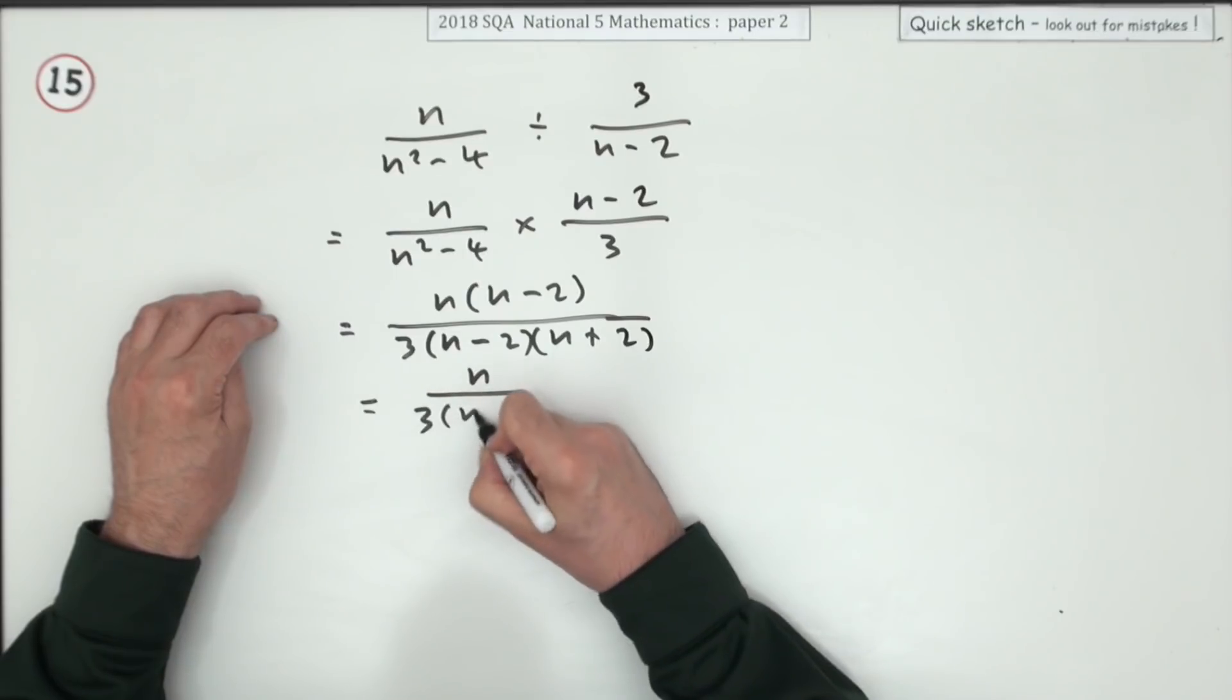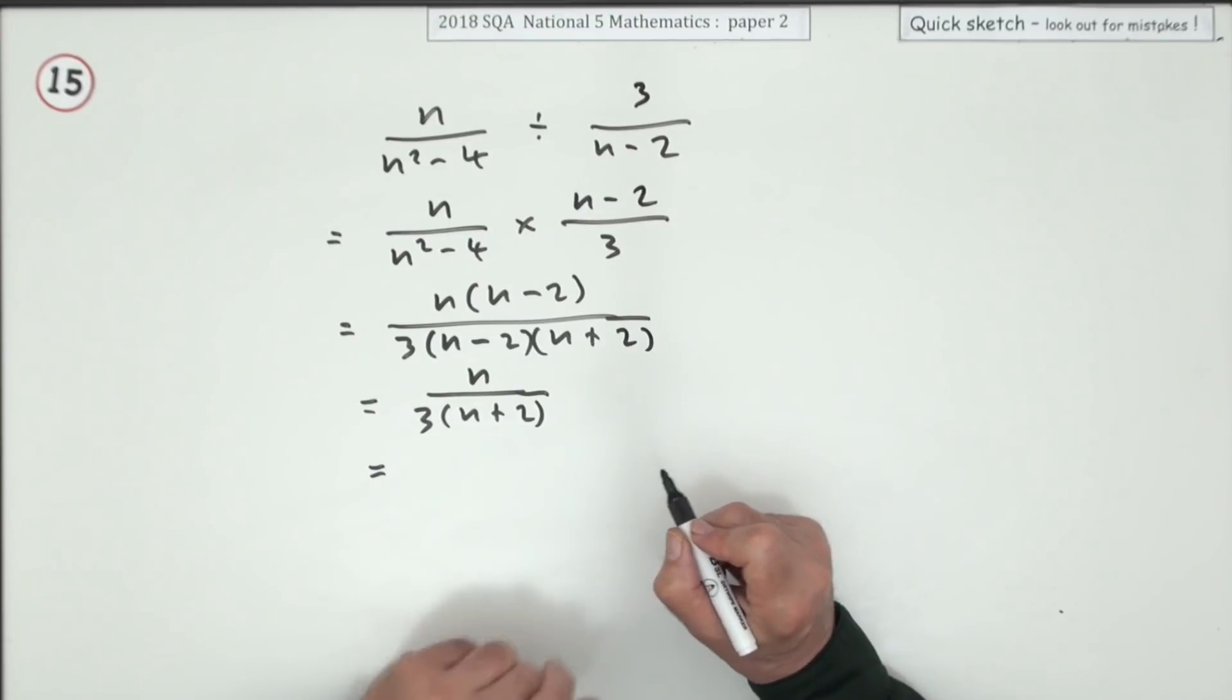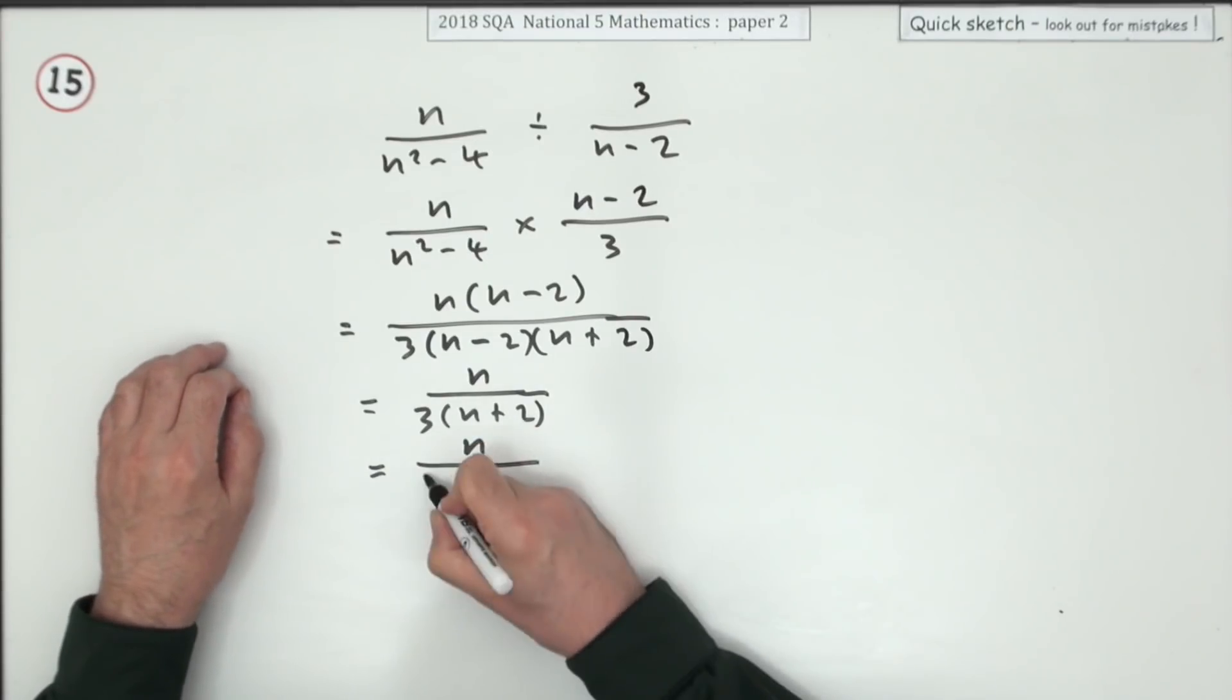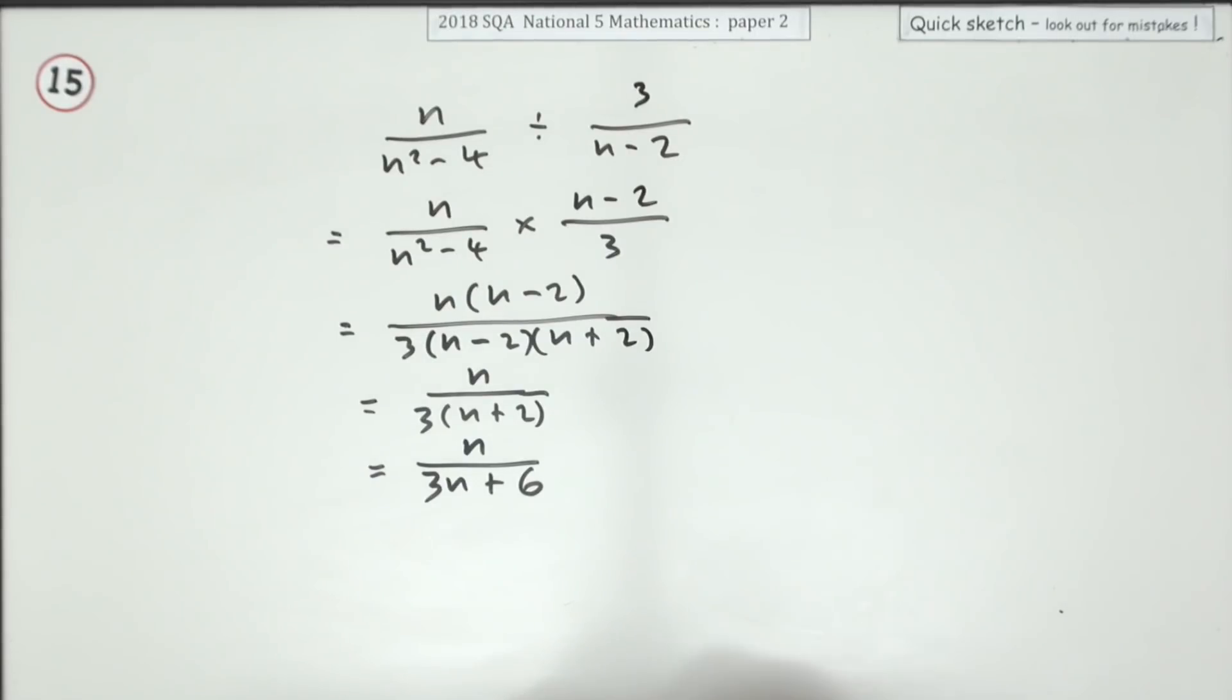I'm left with n on top and 3 times n plus 2 underneath. I just wonder should I leave it like that, which is quite neat, or will I just multiply it out to 3n plus 6? Well I have done, so that's me—I'm just going to stop there.